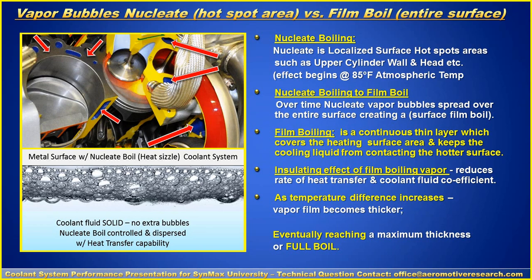Now film boil is a continuous thin layer which covers the heating surface area and keeps the liquid cooling from contacting the hotter surface. In other words, this insulating effect of the film boiling vapor reduces the rate of heat transfer and coolant efficiency. As the heat temperature difference increases the vapor film becomes thicker, eventually reaching a maximum thickness or full boil. So what you want is it's okay to have just a little bit on there so it'll be able to transfer the heat from the metal to the fluid as the fluid's moving by, but if those bubbles start to increase so much the heat cannot transfer through those bubbles and it's a problem.